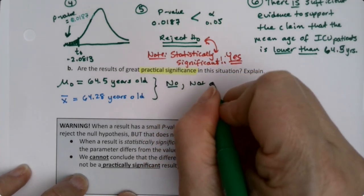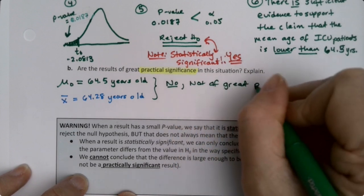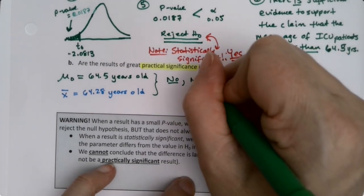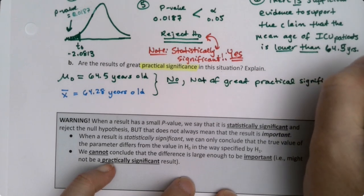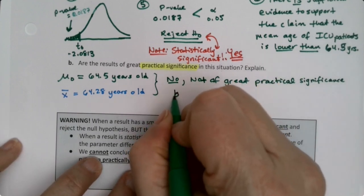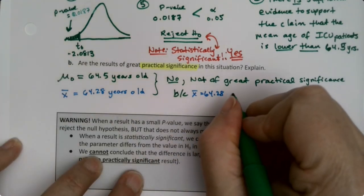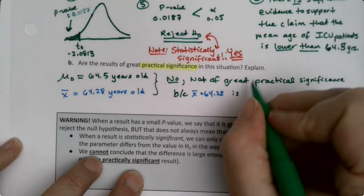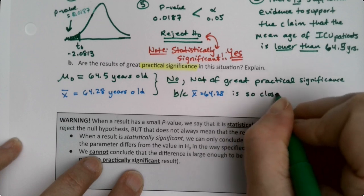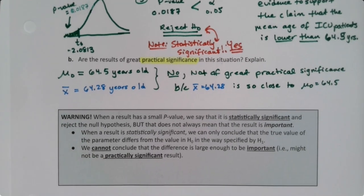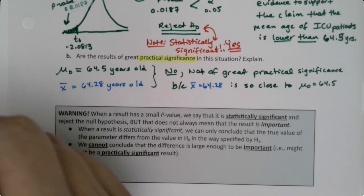This is not of great practical significance — practical meaning in practice, in real life. Because 64.28, which was our X-bar, is just a tiny bit different — so close to the mu-zero, which is 64.5. So even though the statistical test says there's something here, that something might not be that big of a deal.